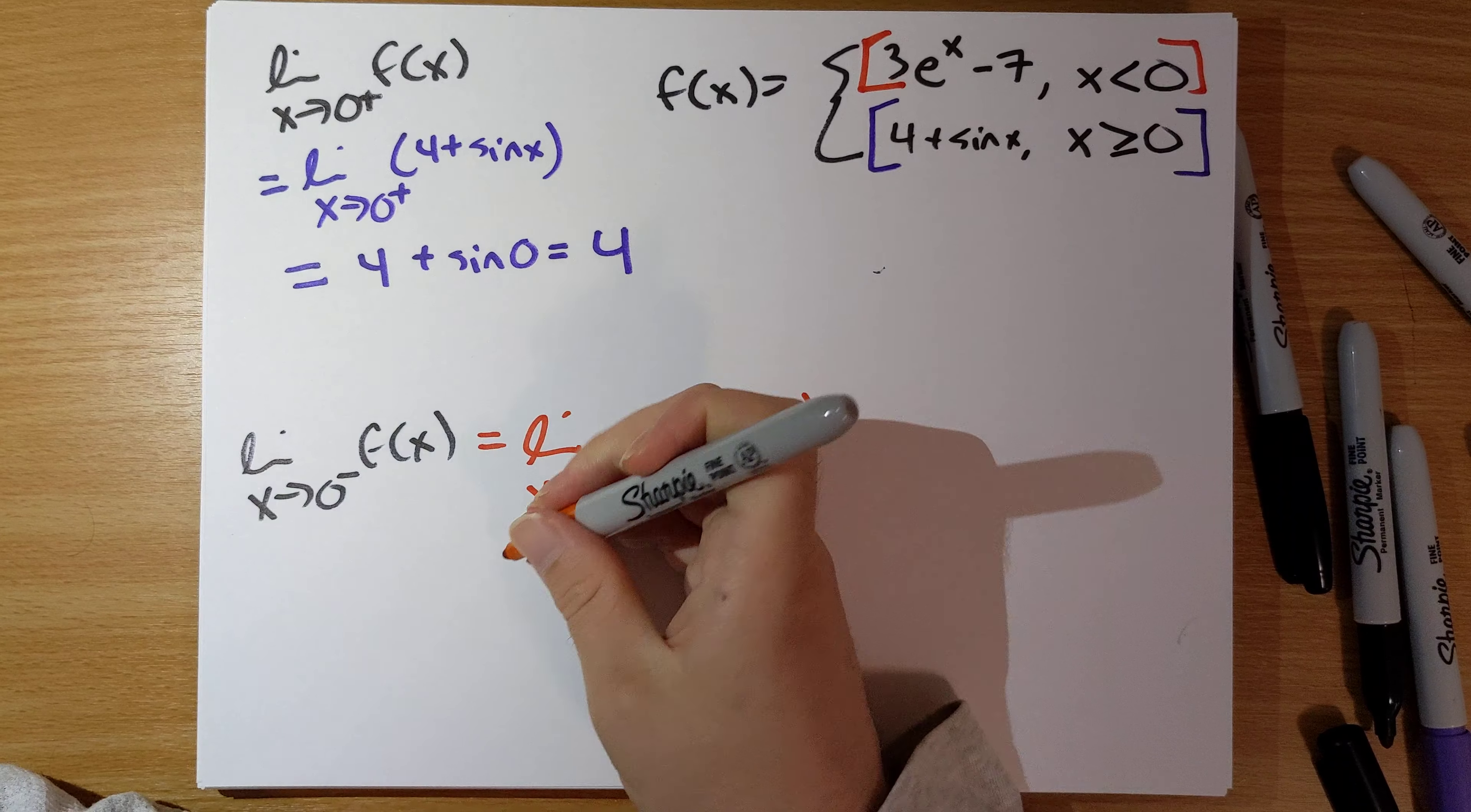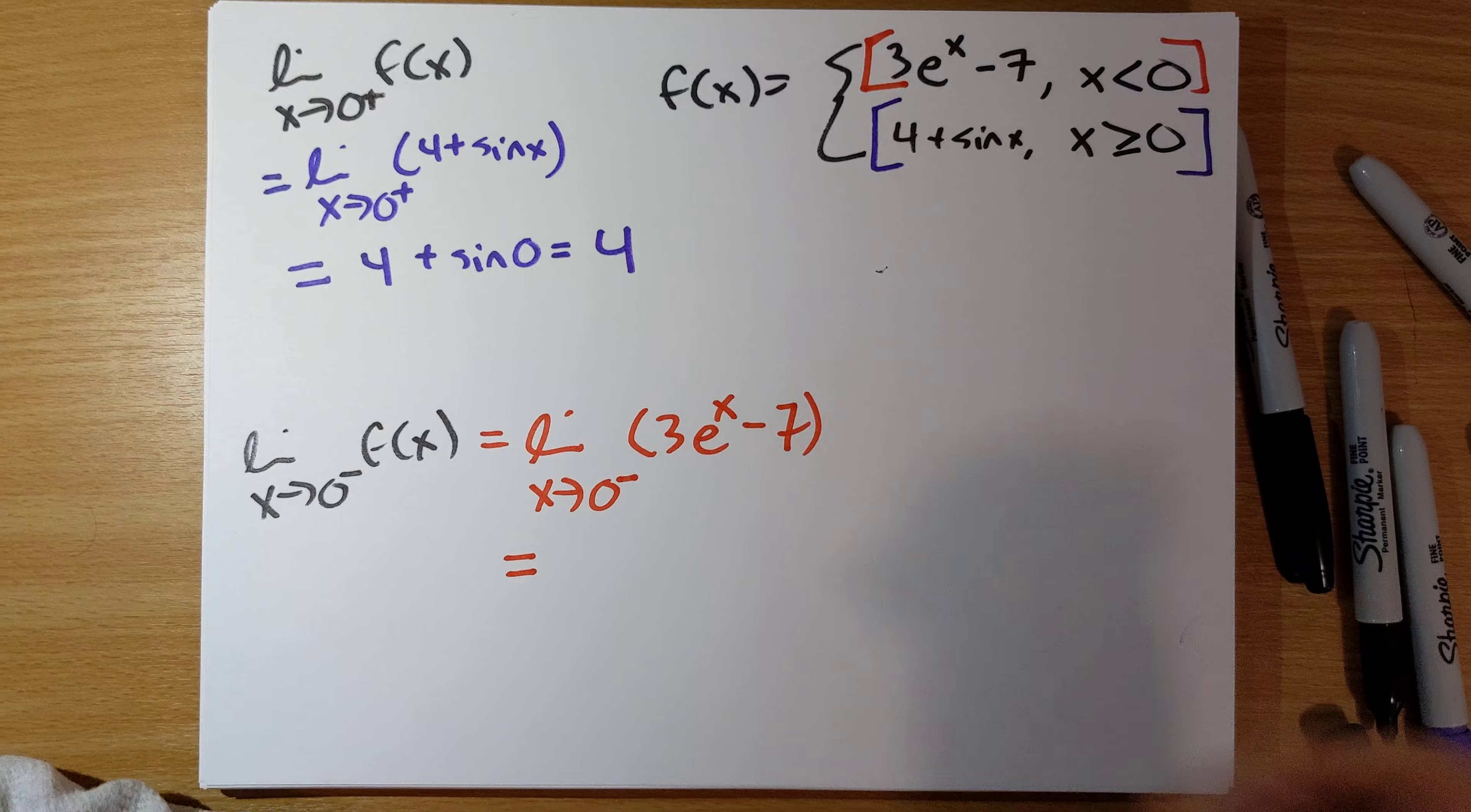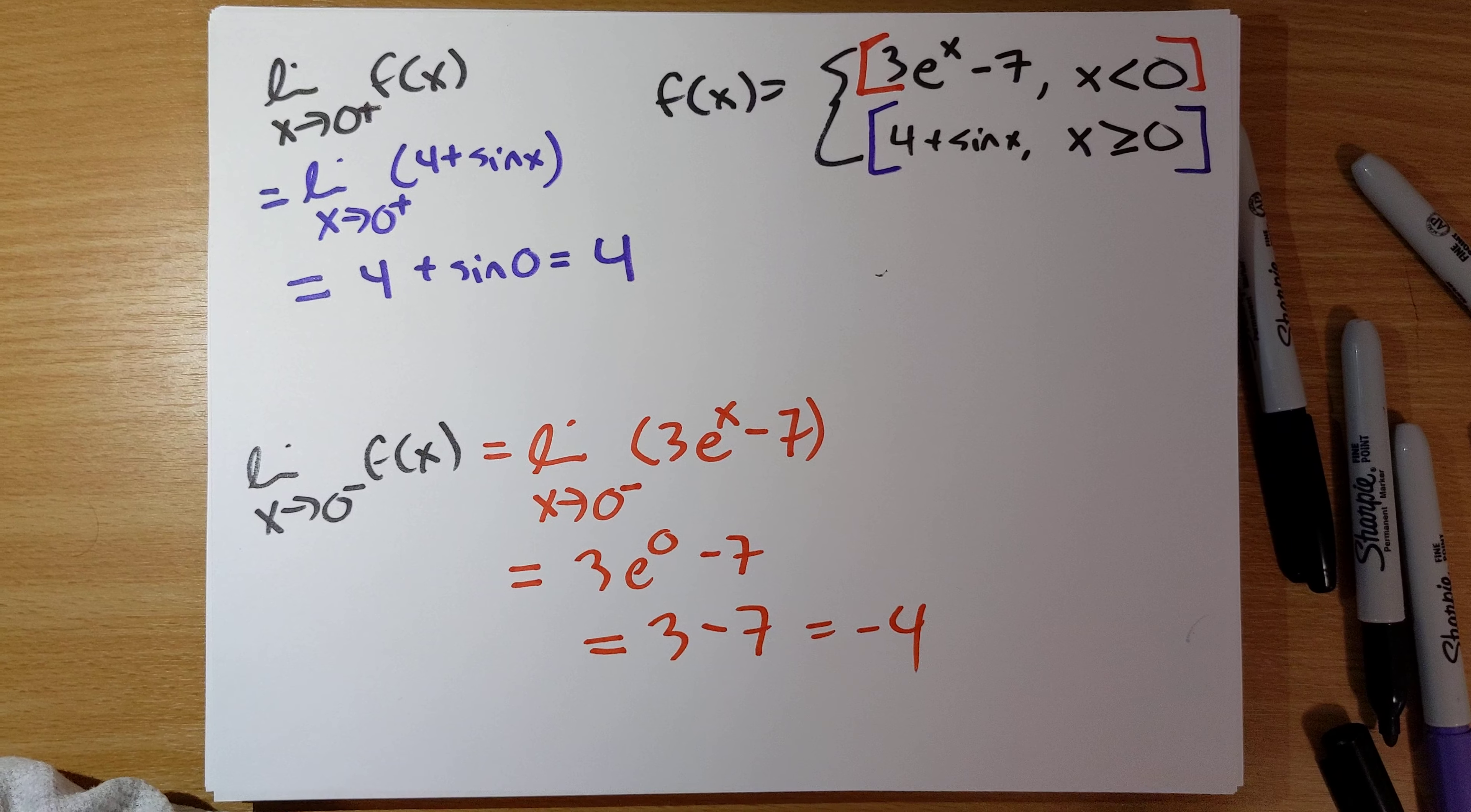Again, we can evaluate this limit by simply substituting in x equal to 0. 3e to the 0 minus 7, e to the 0 is 1, so this is just 3 minus 7, it's negative 4.